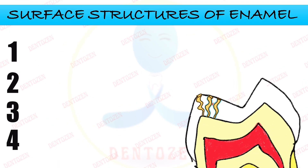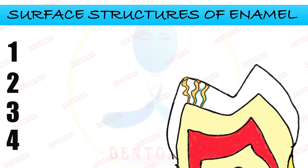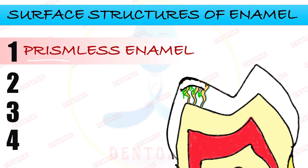Here we have to talk about four surface structures. First, we said that enamel is made up of rods and interrod. But when it comes to the surface of the enamel, the picture is a little different — here we cannot see any rods or prisms. So this layer of enamel on the surface is rodless or prismless. This is the first surface structure: prismless enamel.